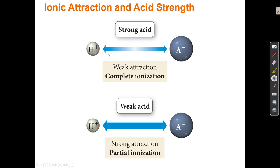Strong acids completely fall apart because the bond between H+ and the conjugate base is weak. Weak acids don't fall apart because H+ and A- are stuck together really tight — it's a very strong bond. If the H+ doesn't come off, it's not really acting as an acid. When H+ comes off really easily, that's a strong acid, because it's a weak bond.